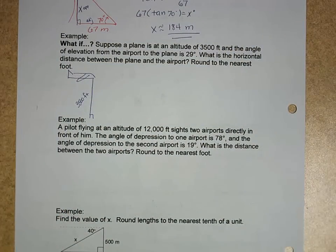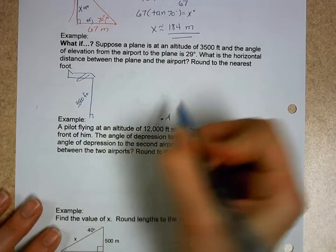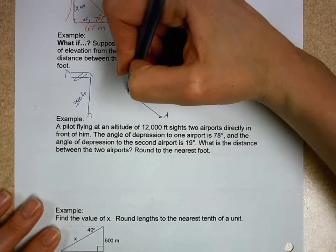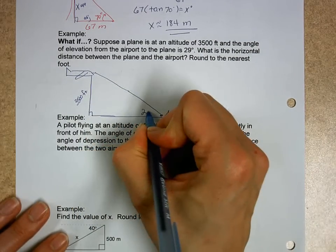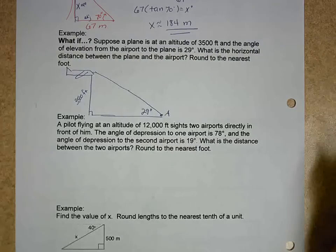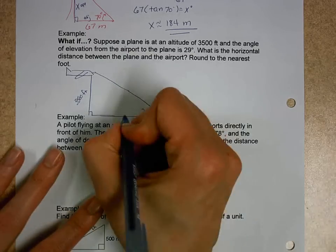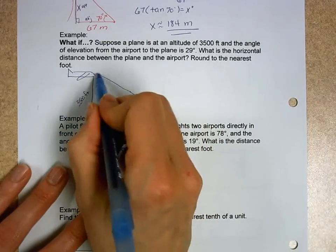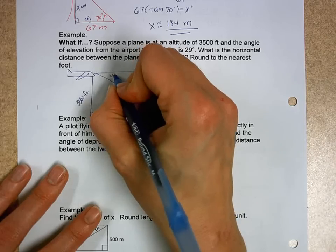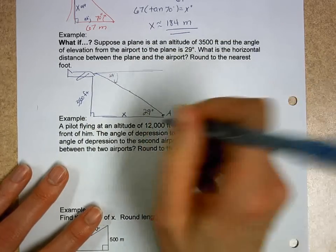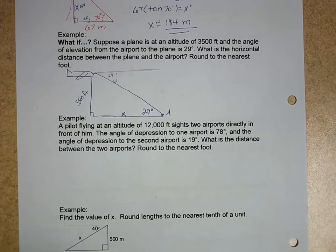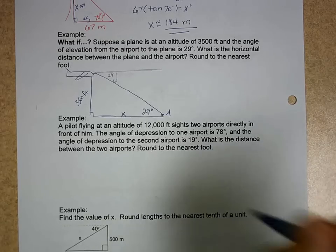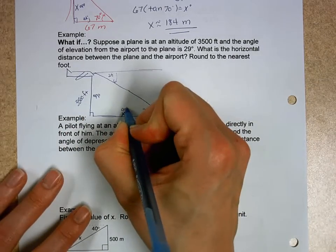The elevation from the airport to the plane is 29 degrees. So the airport would be on the ground going up, looking up to the plane right here, is 29 degrees. Notice I still form a right triangle here. If you were a pilot, you would say the angle of depression was 29 degrees because he would be going down. But angle of elevation and angle of depression are the same. I realize this is my opposite, this is my adjacent.